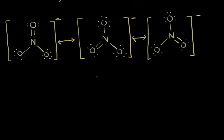Let's draw a simple representation of a resonance hybrid. If we combine all three dot structures, we had a double bond to one oxygen in each resonance structure — the top oxygen in one, the bottom left in another, and the bottom right in the third. In reality, taking the hybrid of all of those, we can think about the electrons being delocalized or spread out among all three oxygens. Instead of a double bond to one oxygen, we show electrons delocalized in each nitrogen-oxygen region — stronger than a single bond, but not as strong as a double bond.